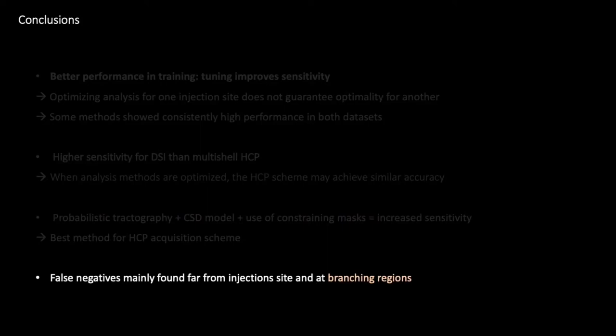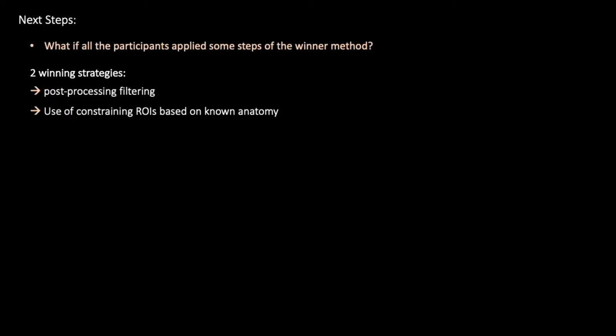When looking at submissions for the same false positive rate, we can see false negatives across all submissions, but mostly located at branching regions. Across submissions, two strategies seem to significantly improve results accuracy.